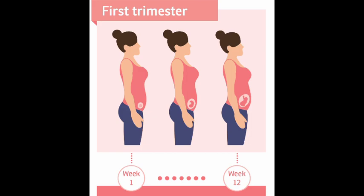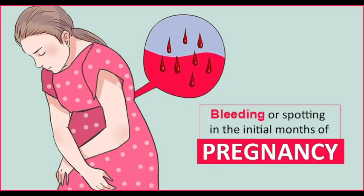The symptoms can include: bleeding from the vagina with or without pain, including light bleeding called spotting, and pain or cramping in the pelvic area or lower back.